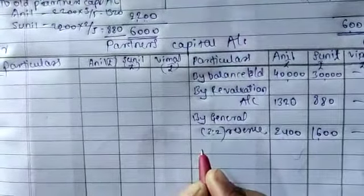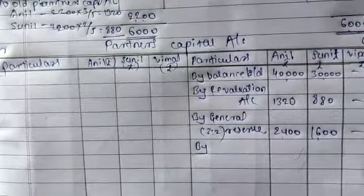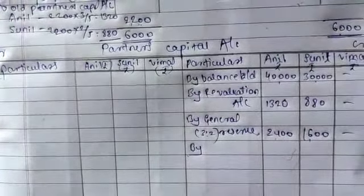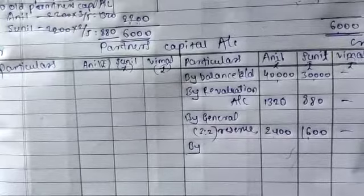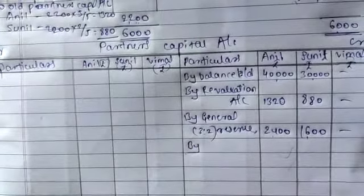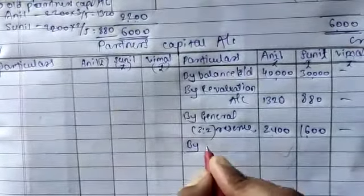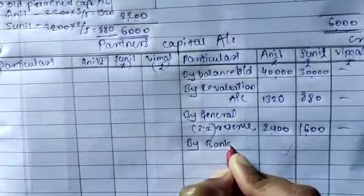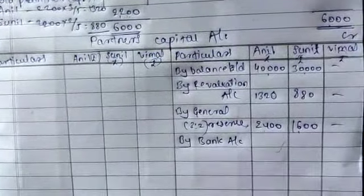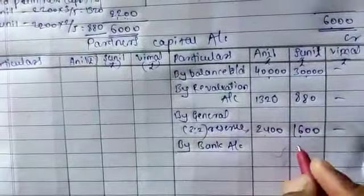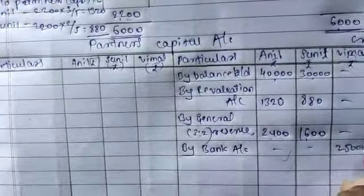Next, take the new partner's capital. The new partner brings ₹25,000 as capital. The entry is made via bank account — 'By Bank Account' — for ₹25,000 in Vimal's column.